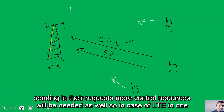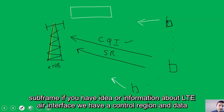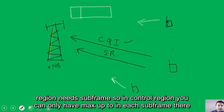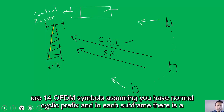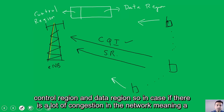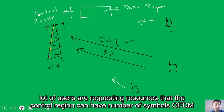In LTE, in one subframe — if you have knowledge of the LTE air interface — we have a control region and a data region in each subframe. There are 14 OFDM symbols per subframe assuming normal cyclic prefix, and each subframe is divided into a control region and a data region.